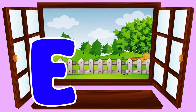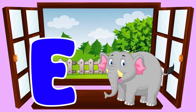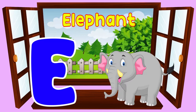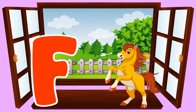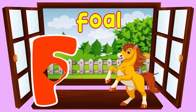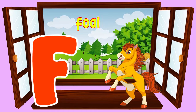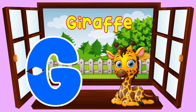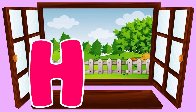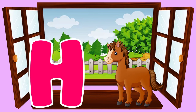E is for elephant. e, elephant. F is for fox. f, fox. G is for giraffe. g, giraffe. H is for horse. h, horse.